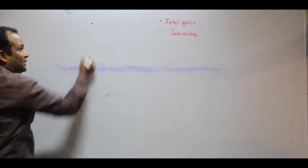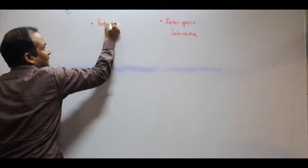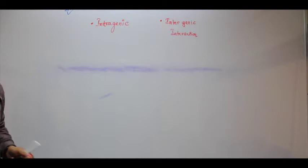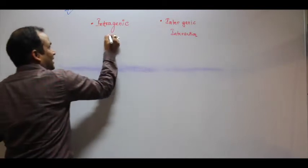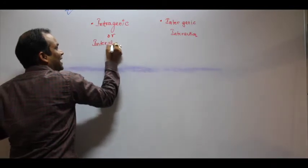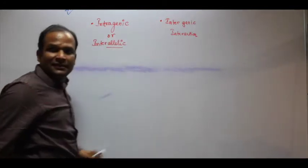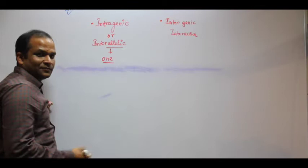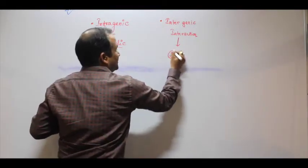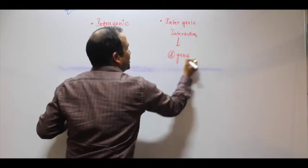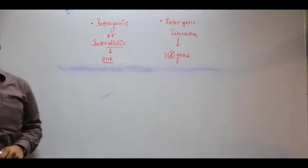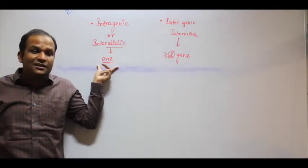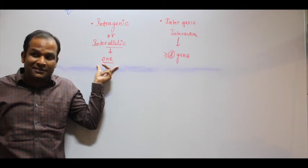The other interaction is intragenic, meaning within the gene. One gene has two alleles, so it is basically interallelic. Interallelic comes into play when one gene is considered. Intergenic is when at least two genes or more than two genes are considered. So intergenic and intragenic - intragenic means interallelic, meaning dominant or recessive alleles.